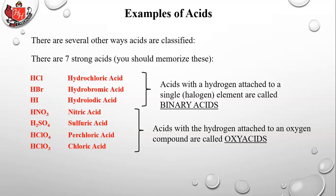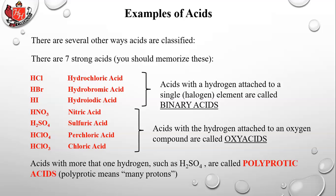The last four strong acids are called oxy acids because they all contain oxygen atoms. Acids with the hydrogen attached to an oxygen compound are called oxy acids. Acids with more than one hydrogen, such as H2SO4, are called polyprotic acids — meaning many protons. Sulfuric acid has two hydrogens: one always breaks away making it a strong acid, while the second does not always dissociate.